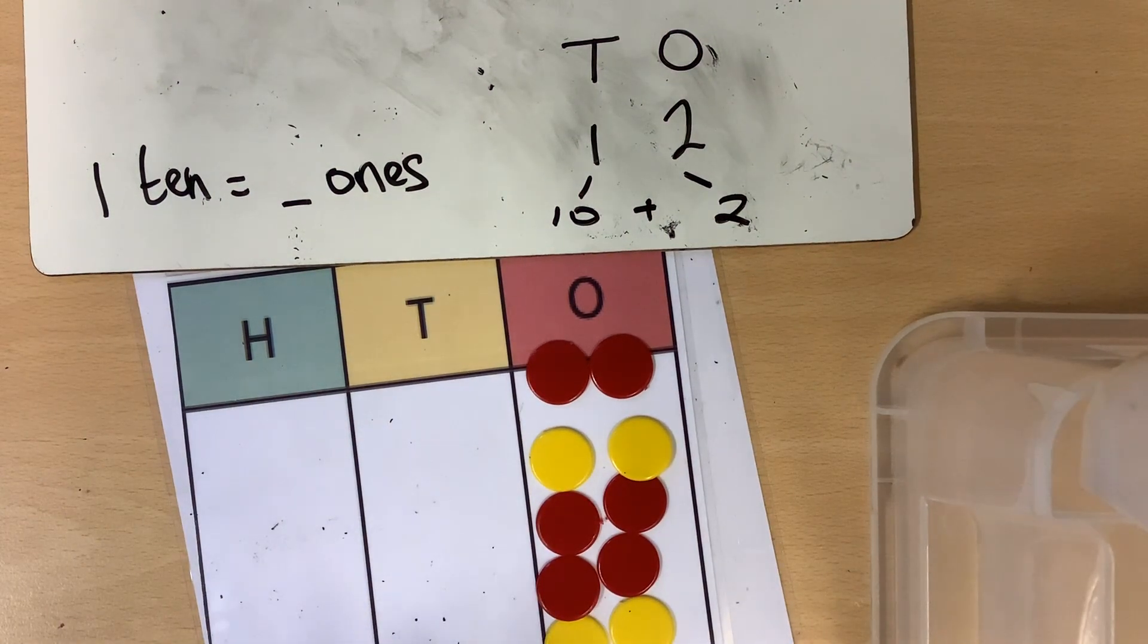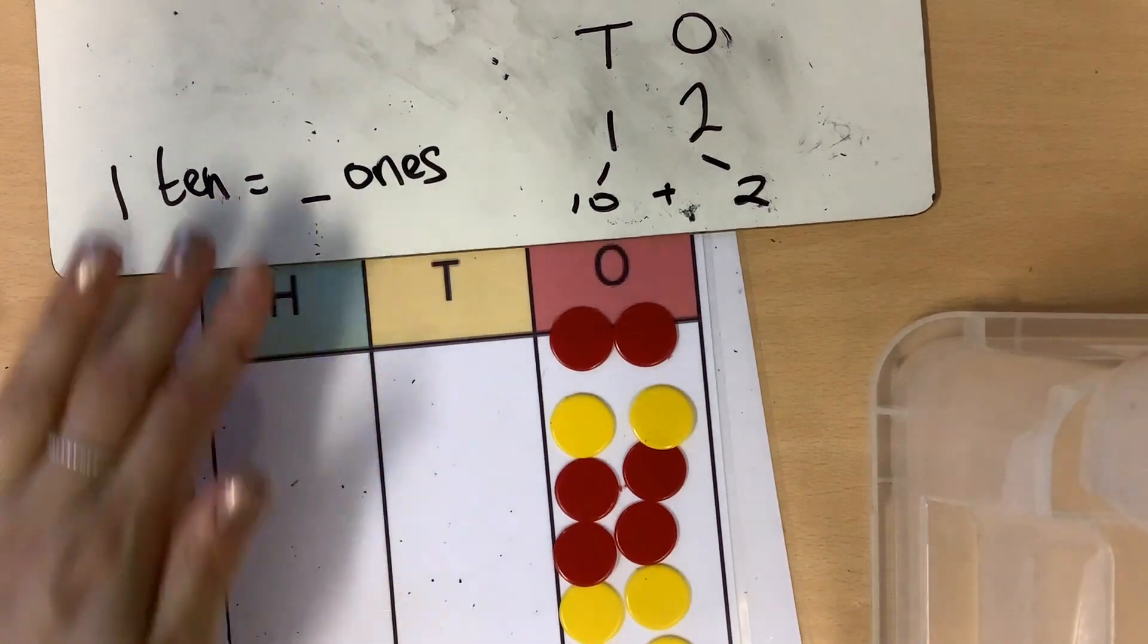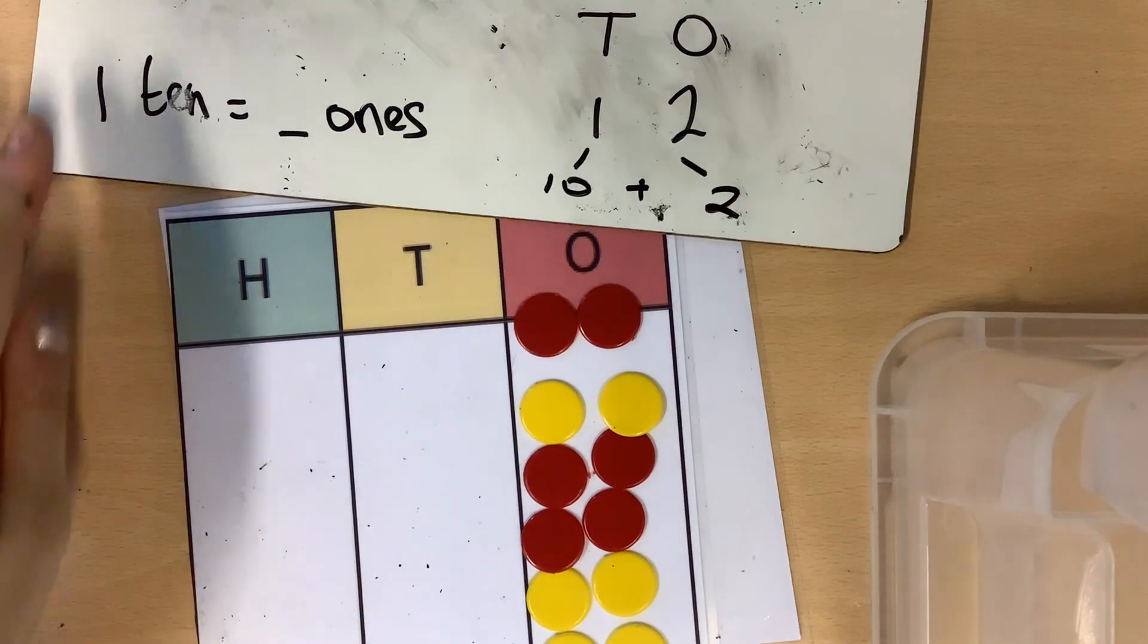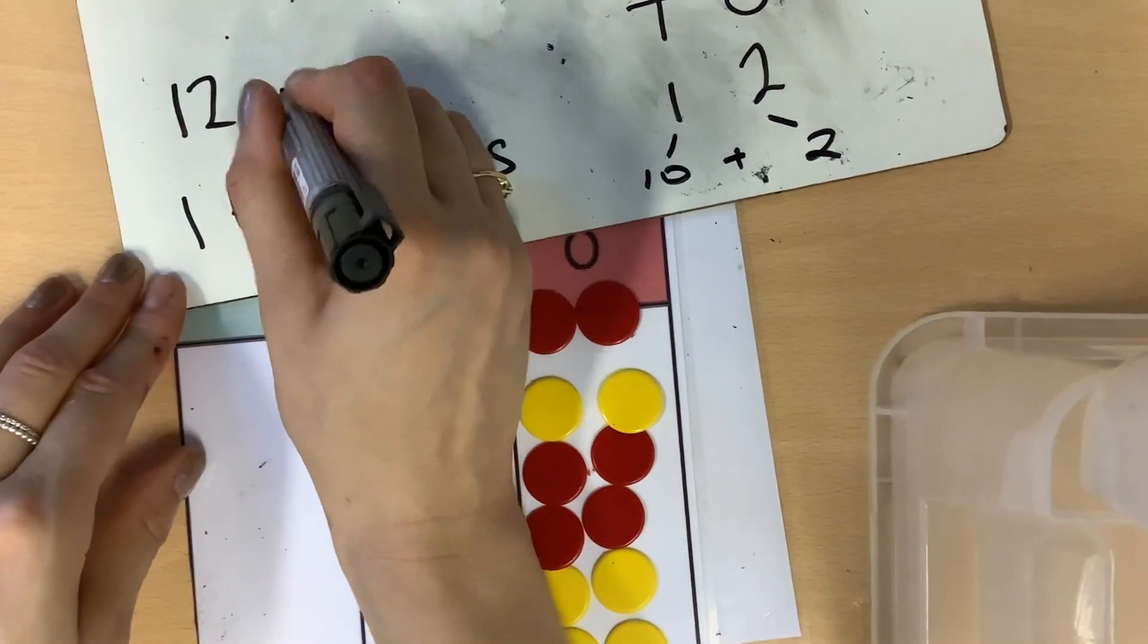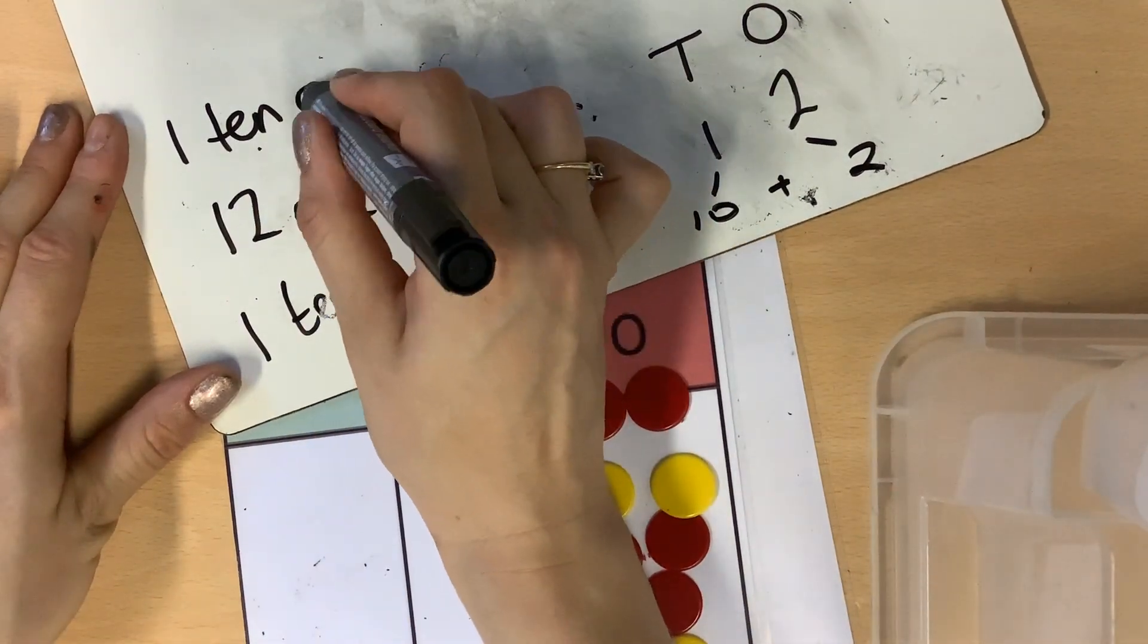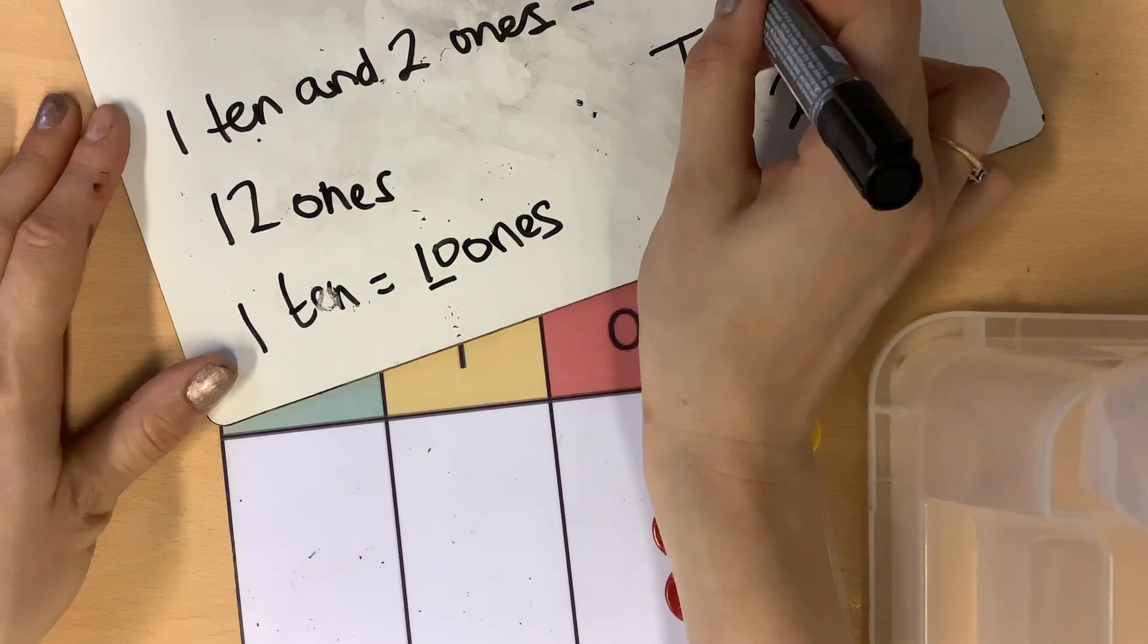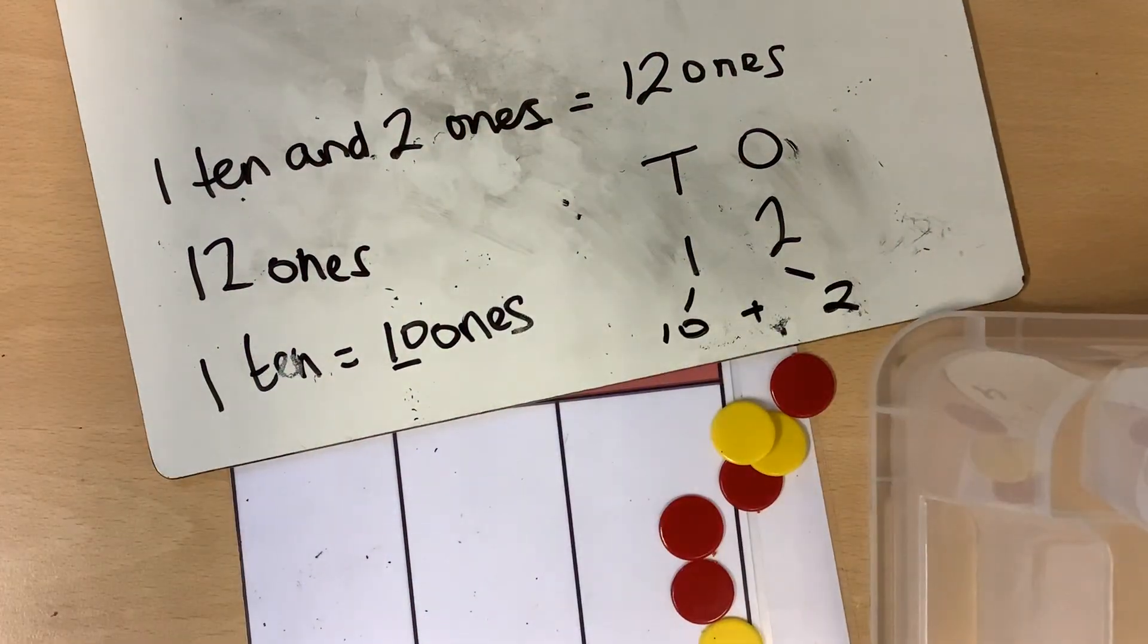I'm going to check. Do I still have the number 12? I'm going to count in my 2s. 2, 4, 6, 8, 10, 12. I still have 12. This time I've made 12 using 12 ones. So what have I just found out? I found out that 1 ten and 2 ones is the same as 12 ones. I did that first swap and checked that it still gave me the same total. Why don't you have a go?